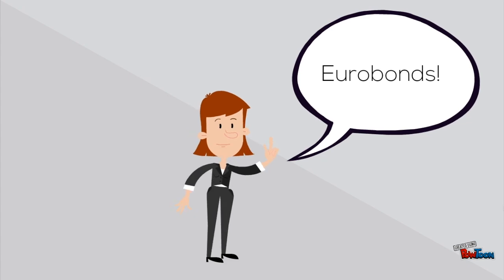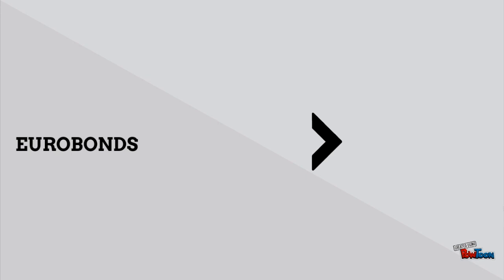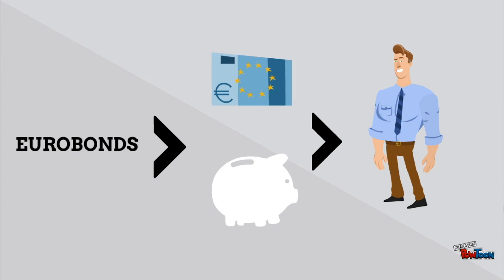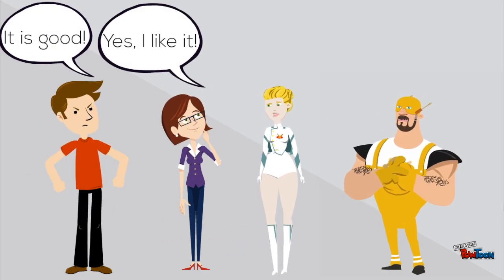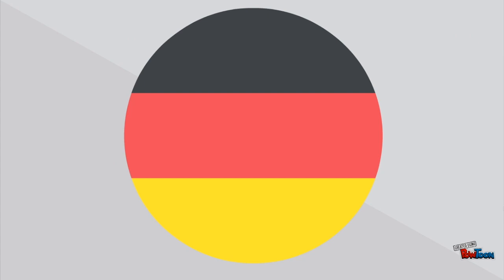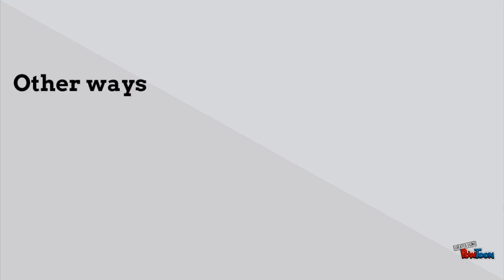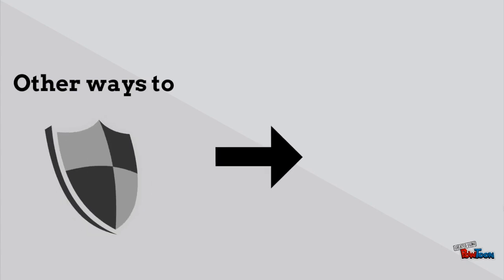Eurobonds: increasingly, the idea that Eurobonds are the ideal solution to solve the European debt crisis is coming to light. However, together with financial and budgetary measures, the bonds would imply changes to European treaties and agreements. There are many different opinions as to whether Eurobonds really are the best solution. Germany, for example, insists that this short-term solution is most probably going to increase countries' future liabilities. There are, of course, more measures and procedures that have been carried out, such as the European Monetary Fund.